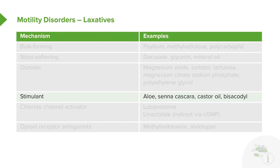Stimulants work by actually irritating the bowel. The prototypical and very old example is castor oil, though it is no longer used. We now use agents like aloe and senna, which are more gentle and easier on the system.